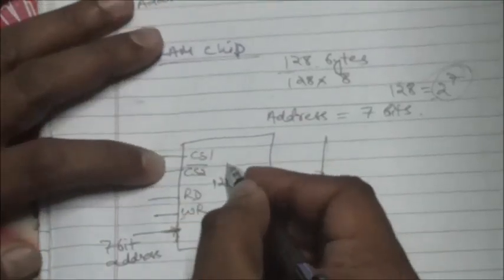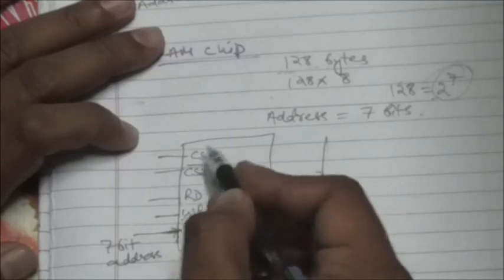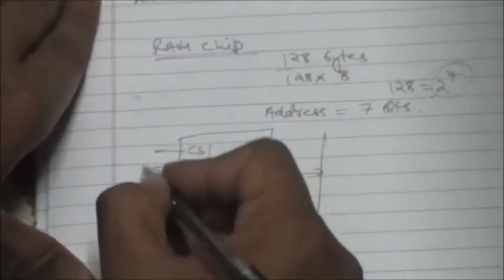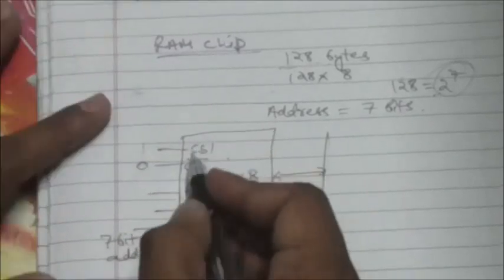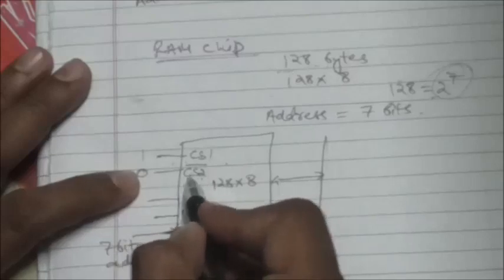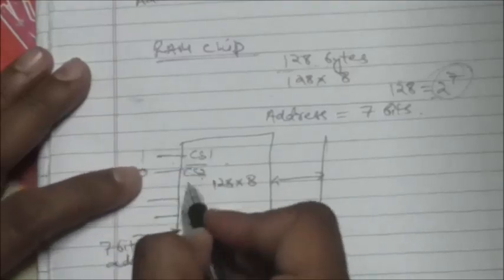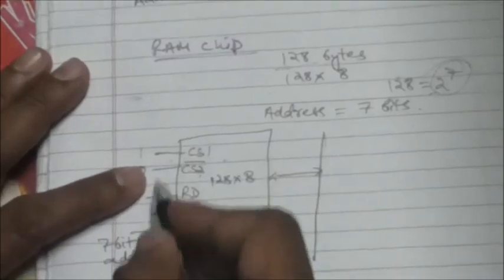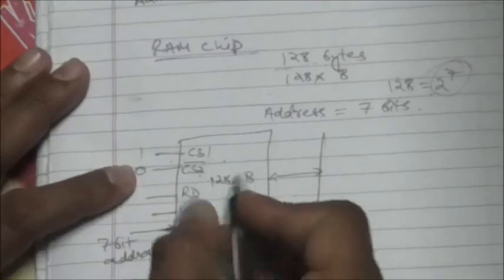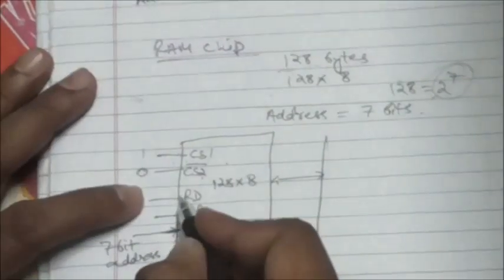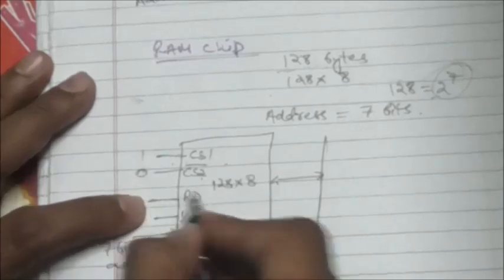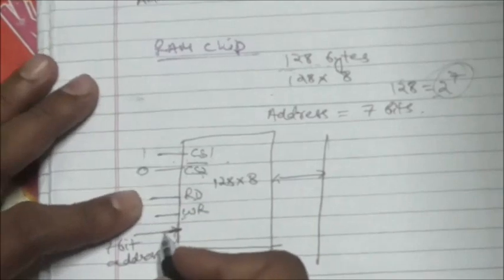For read and write operations, this chip must first be enabled by the chip select inputs. To enable this chip, CS1 should be 1 and CS2-bar should be 0. Once the chip is enabled with inputs 1 and 0, to perform a read operation the read input line should be enabled, and the address should be provided at the 7-bit address input.